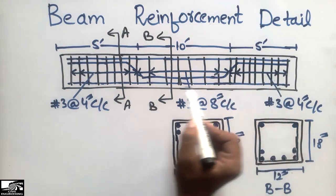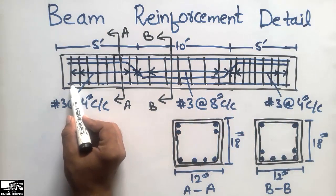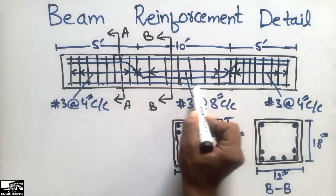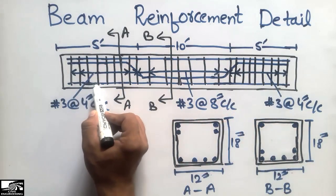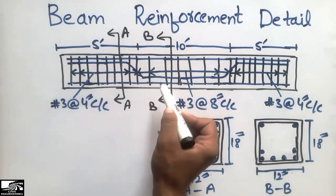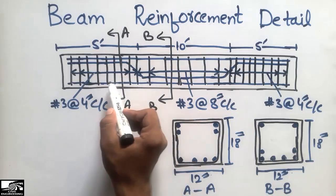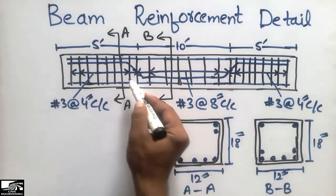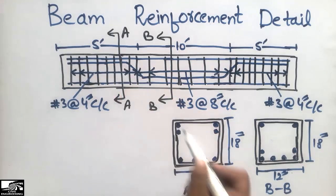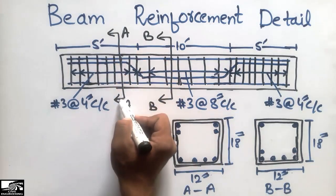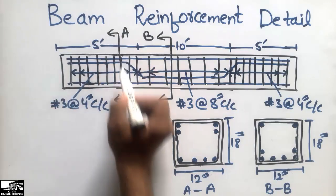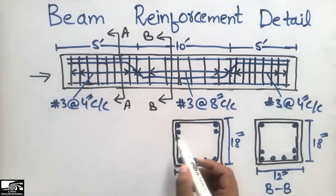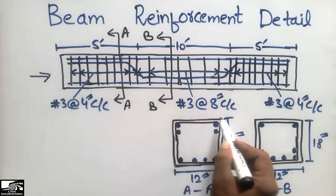In this beam we can see that there are main bars placed at the bottom. We can see the main bars, but we cannot tell how many numbers of bars there are just from the elevation view. For this we will study the section detail — looking at Section AA from the side gives us the cross-section of the beam.